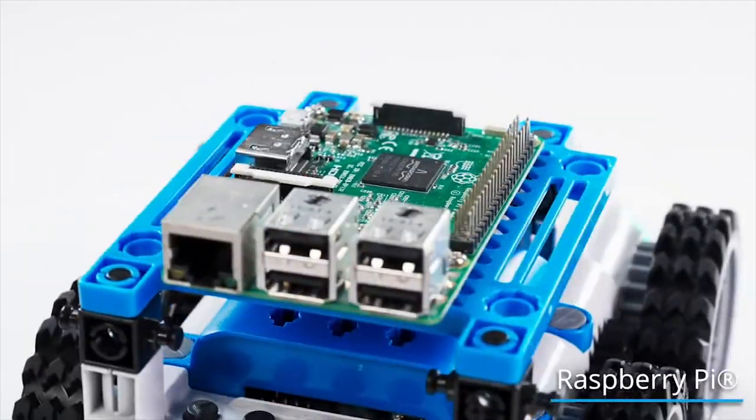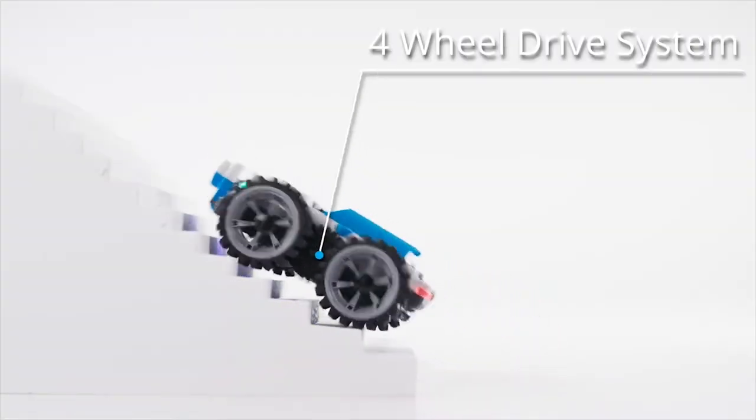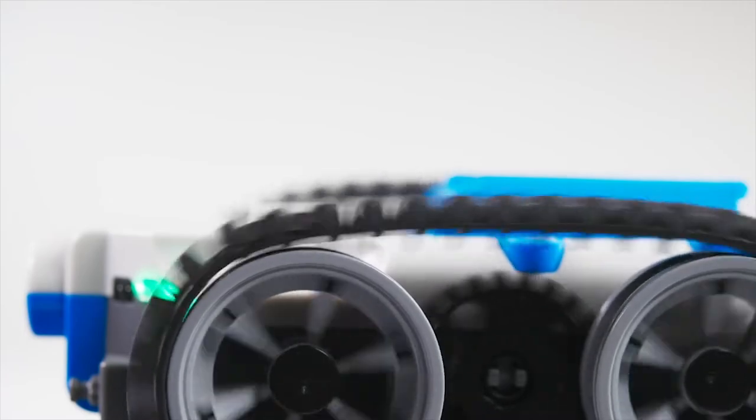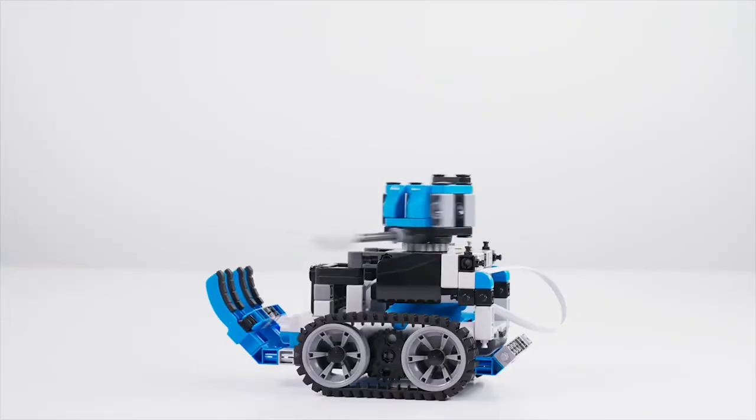With two high-power, high-torque motors driving the wheels and the ability to interchange tires with tracks, you can completely change how your robot looks and handles its terrain.